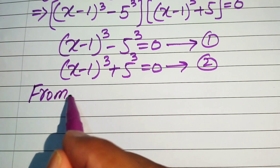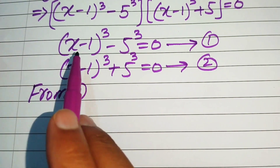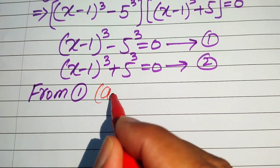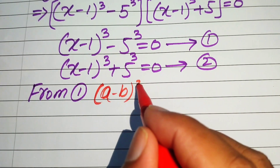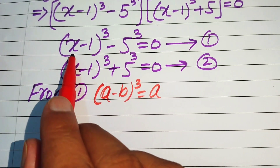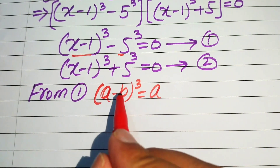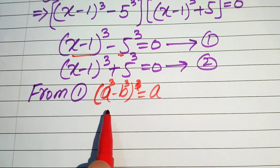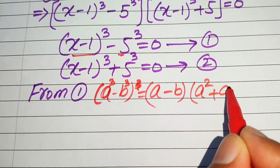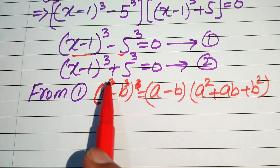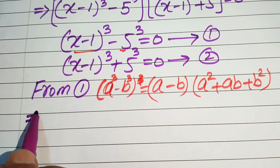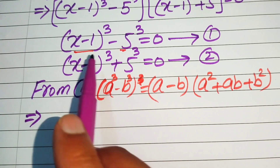Focusing on Equation 1, we use the difference of cubes formula: a cubed minus b cubed equals (a minus b)(a squared plus ab plus b squared). Here the value of a is (x minus 1) and the value of b is 5.